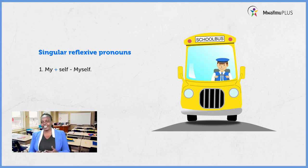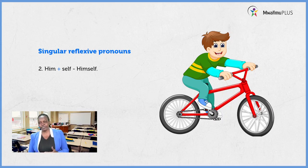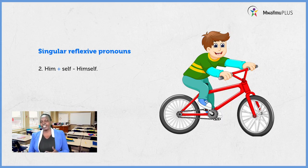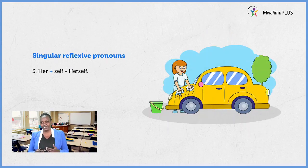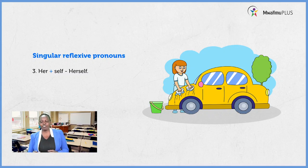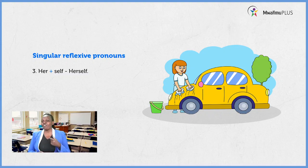Let us see another singular reflexive pronoun. We have the pronoun he, which has its object pronoun him. From him, if we add self, we get the reflexive pronoun himself. We can say: he is riding the bicycle himself. We also have her, a singular personal object pronoun. If we add self, we get herself — that is the reflexive pronoun.